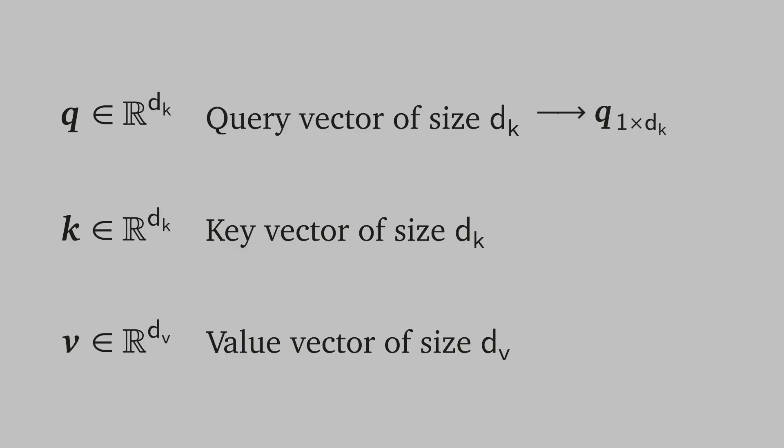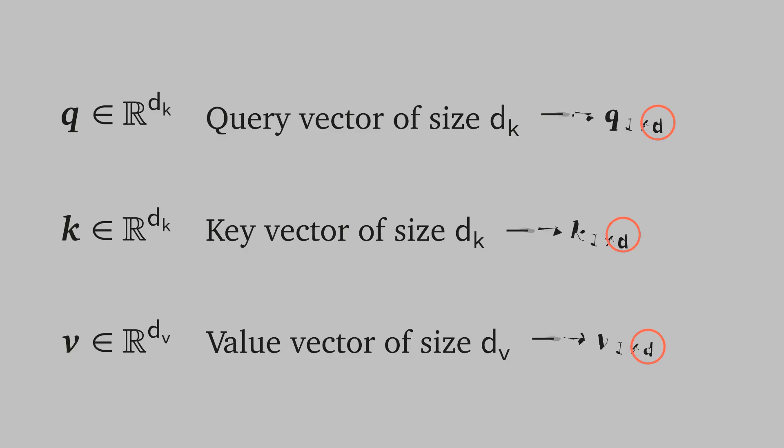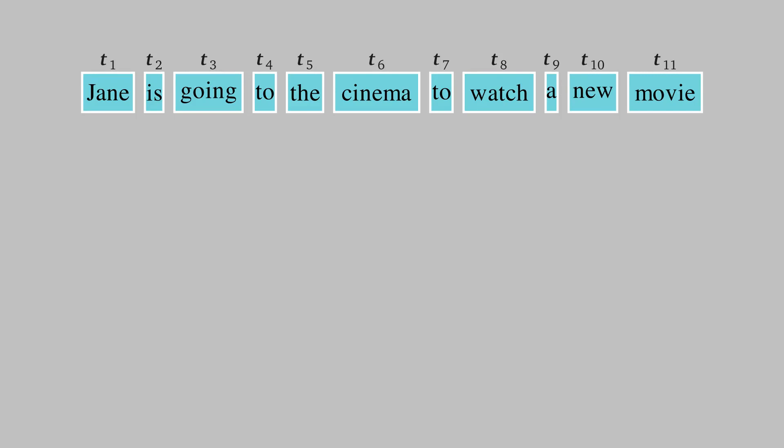Since these are row vectors, we can use subscript notation to show their dimensionality: q is 1 by d_k, k is 1 by d_k, and v is 1 by d_v. In practice it's easier to make these vectors the same size, since it will be simpler to track their dimensionalities. So we will use notation d as the dimensionality of all three vectors.